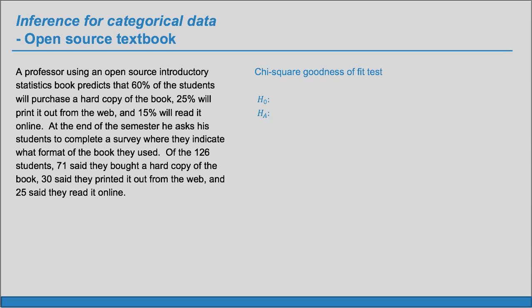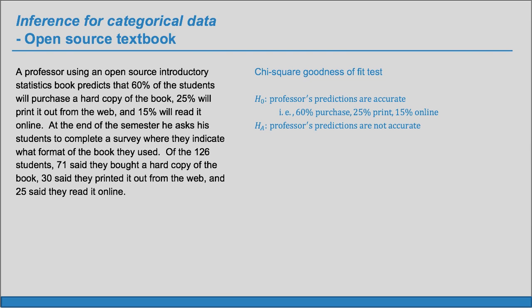We can set up our hypotheses. The null hypothesis says the professor's predictions are good. The alternate hypothesis that needs evidence says no, those predictions are off. So our null claim says the professor's predictions are accurate, i.e. 60% purchased, 25% print, 15% online. And the alternate hypothesis says that the professor's predictions are not accurate. We can set our significance level alpha to 0.05.